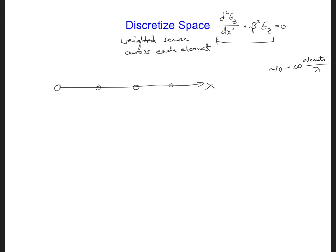For the finite element method there are what are called nodal elements — that's what I've drawn here — and there are also vector elements. For one-dimensional nodal elements we would solve for the unknown at the endpoints of each element. So this is element number one, here's element two, element three, and these are the two endpoints of each of those.